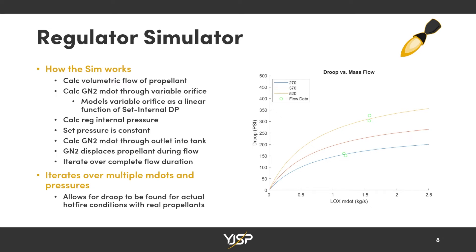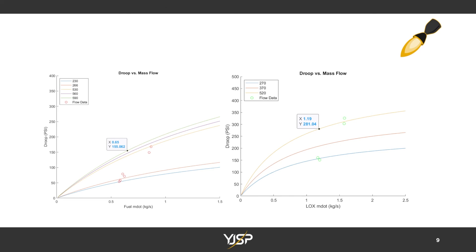Running the droop calculator over every combination of flows and pressures, we get three lines showing different pressures that the regulator is actually regulating to. The green dots show the actual data we obtained, and you can see it lines up pretty nicely. Using this graph, we can find what the actual droop would be for a static fire or launch with the actual propellants we're going to use. The plot on the right is the one just described; the one on the left is for fuel and works essentially the same way.